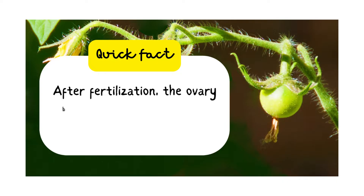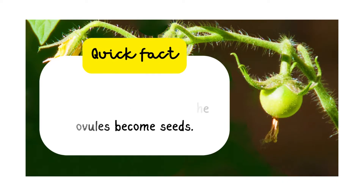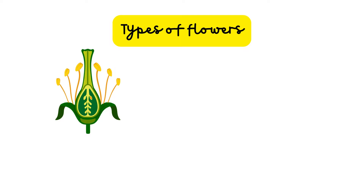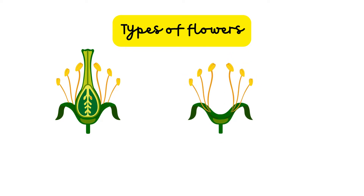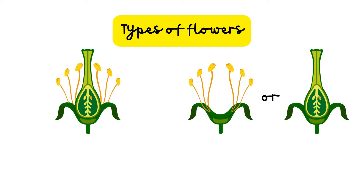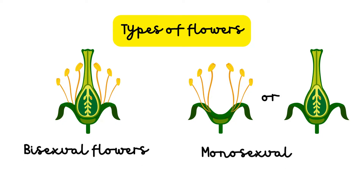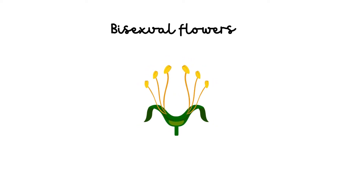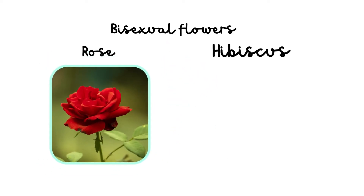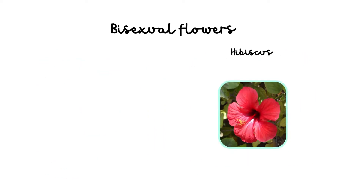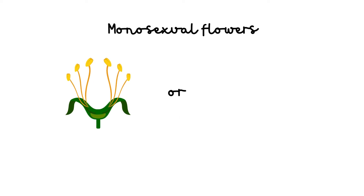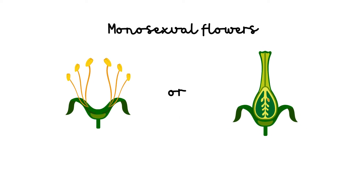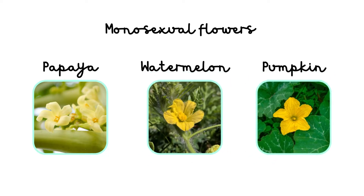Quick fact: after fertilization, the ovary becomes the fruit and the ovules become seeds. Types of flowers. Some flowers contain both male and female reproductive parts, whereas some may contain only one of these, that is, either the male reproductive part or the female reproductive part. On the basis of this, flowers are categorized as bisexual and monosexual. Bisexual flowers contain both the male and the female reproductive parts, and so they are also called complete flowers. Flowers of papaya, watermelon, and pumpkin are some examples of monosexual flowers.